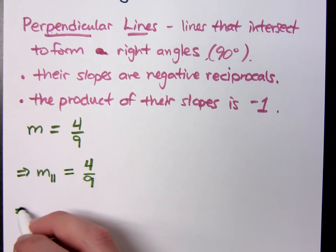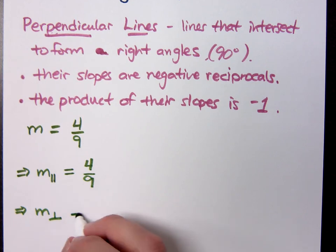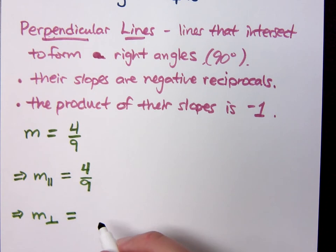Well then, what would your perpendicular slope be? It's the negative reciprocal. So I said you have to flip it over and change the sign. Good old flip and switch.